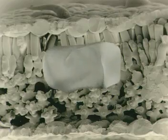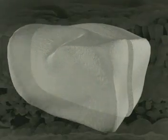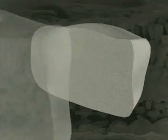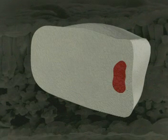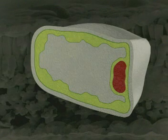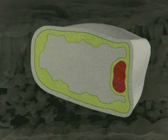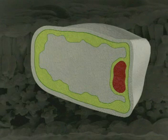A typical plant cell is like a box. Take a look inside and you'll find a nucleus, the control centre of the cell. Surrounding it is the cytoplasm where all the chemical reactions which keep the cell alive take place.